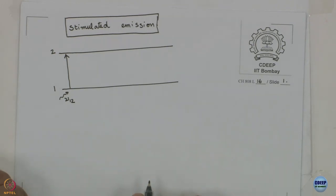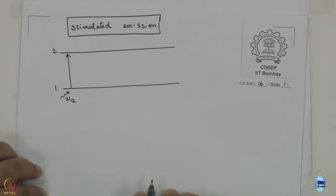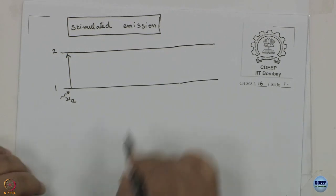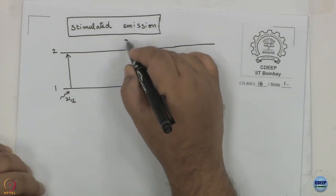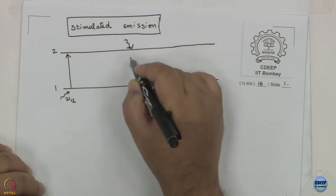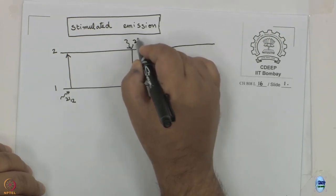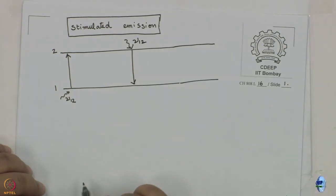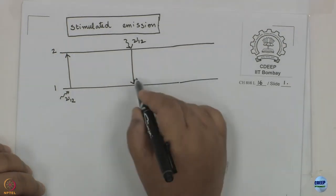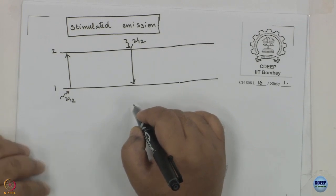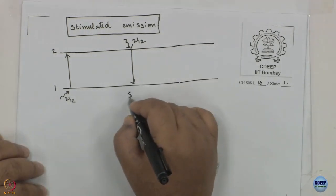When a photon of frequency ν₁₂ is incident on the system, we understand very clearly that absorption is going to take place. What we might not understand to start with is that the opposite phenomenon might also be brought about by a photon. This is an emission, but it is not an emission by itself — this is called stimulated emission.